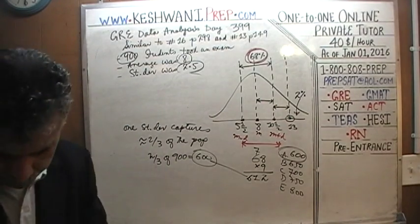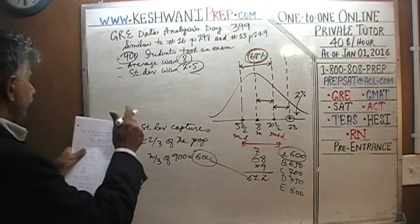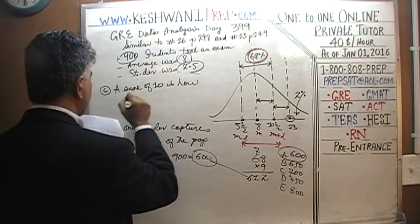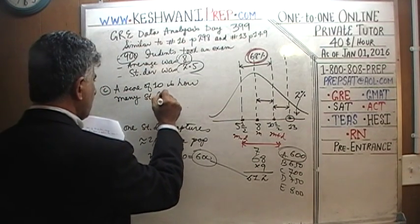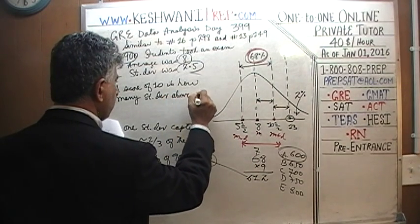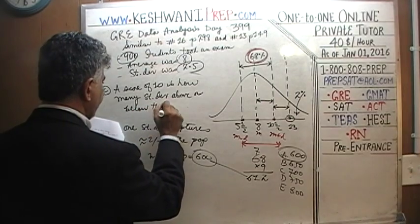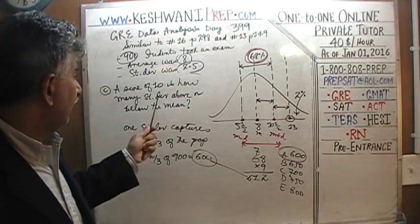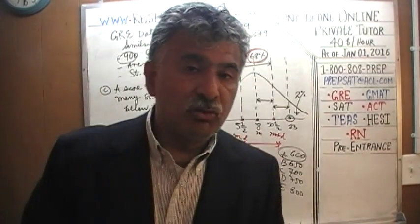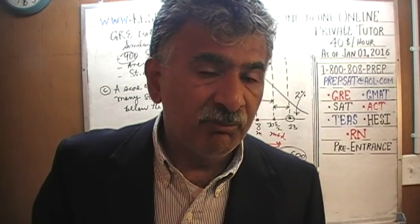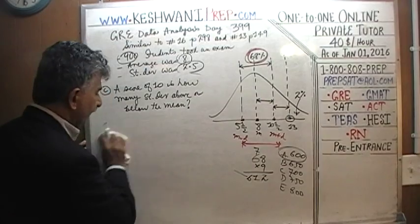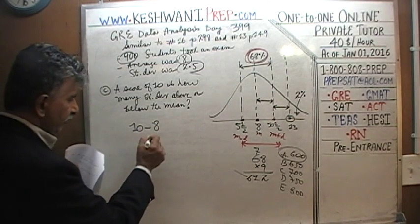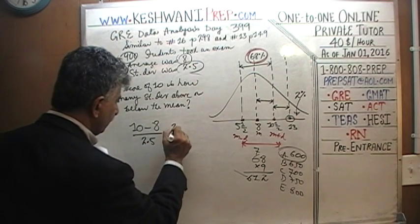Part C: a score of 10 is how many standard deviations above or below the mean? The mean is 8 and this student scored 10, so obviously he is above the mean. He is 2 points above the mean. The question is: 2 points transfers into how many standard deviations? His score is 10, the class average is 8 — he scored 2 points above the mean, and the standard deviation is 2.5, so it's 2 over 2.5.